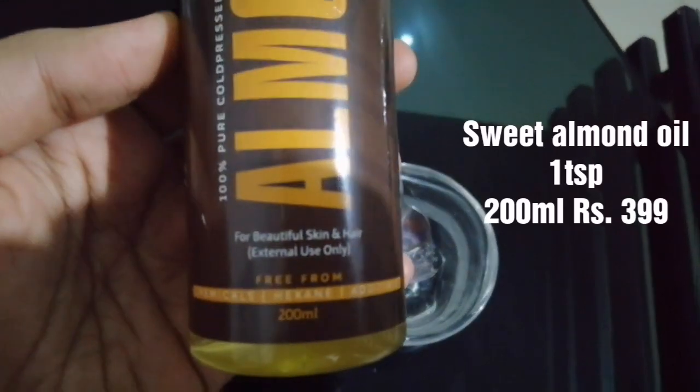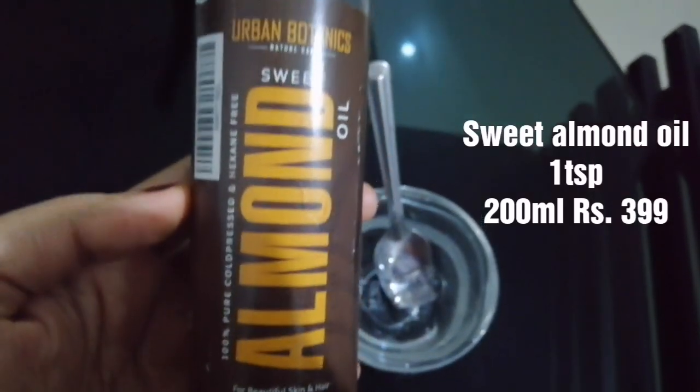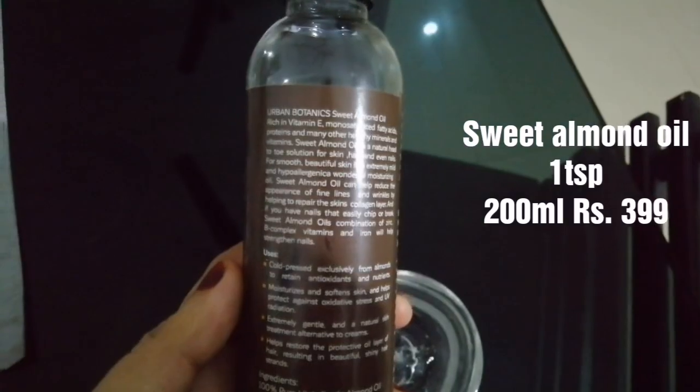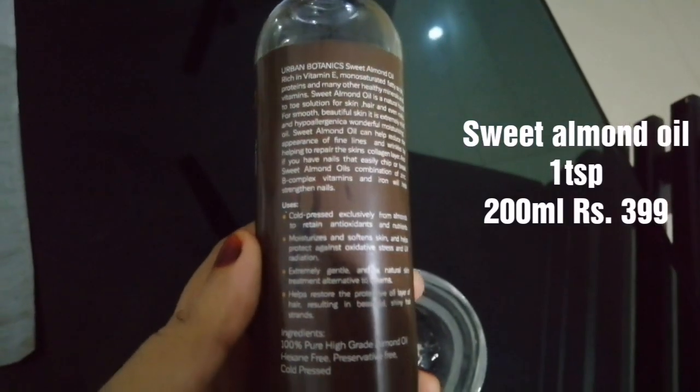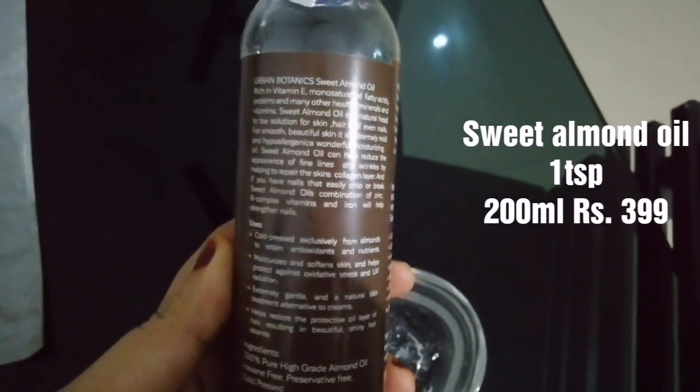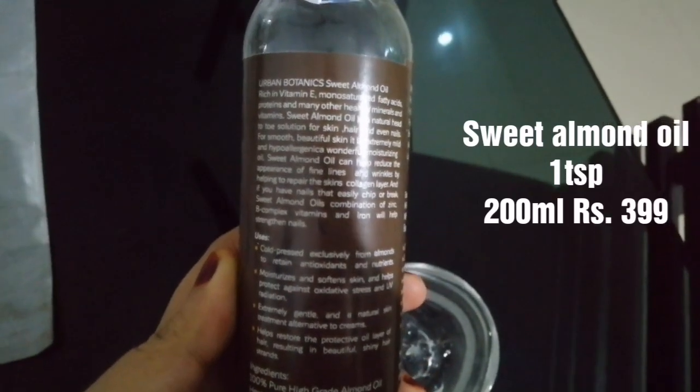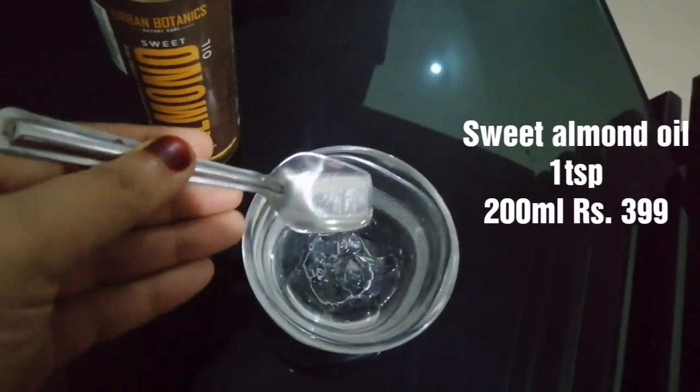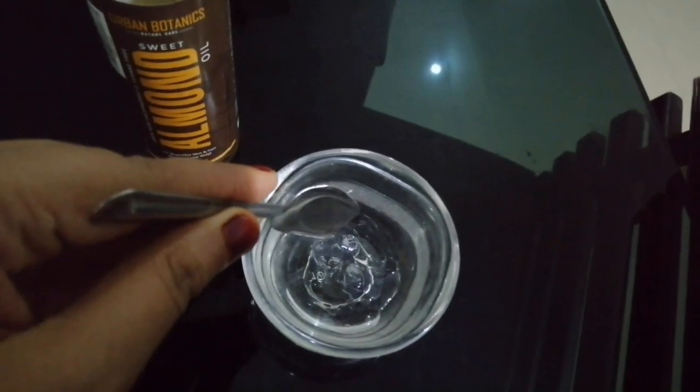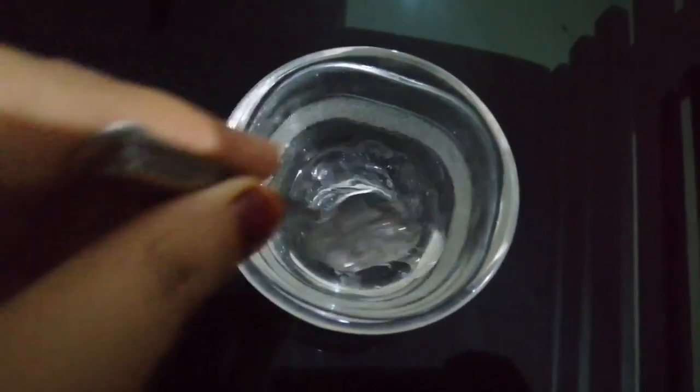Next one is vitamin E capsules. It helps fight the effect of free radicals that cause signs of aging like wrinkles. How to use the eye cream: wash your face before applying the cream. Do not apply on the top eyelids...